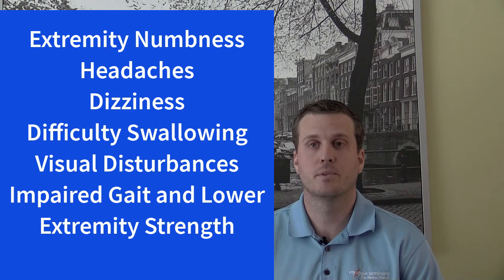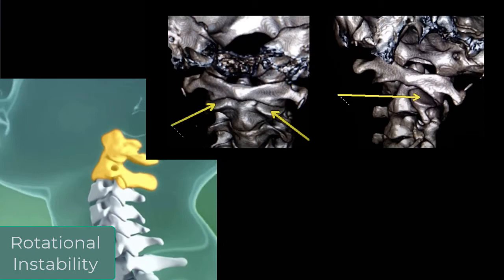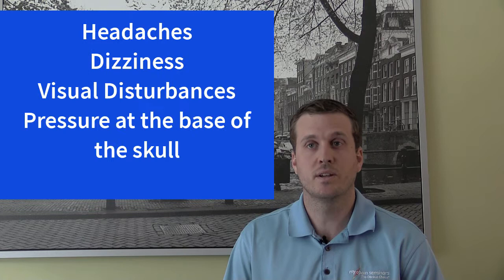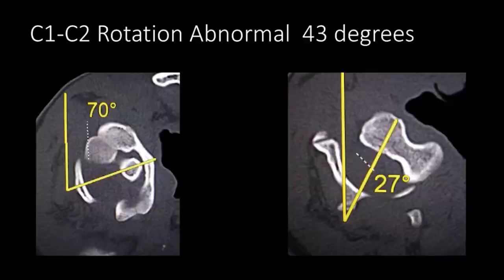Other times, the cranium can be stable, but the segments directly below it are unstable. When the first and second cervical vertebrae are unstable, that creates a rotational instability. Clinically, this would present as symptoms including headaches, dizziness, visual disturbances, pressure at the base of the skull, and blackouts with rotating one's head to end ranges. This is typically diagnosed using a rotational CT scan.